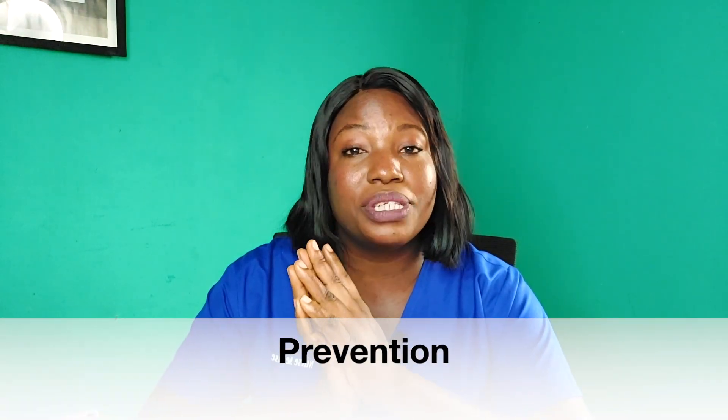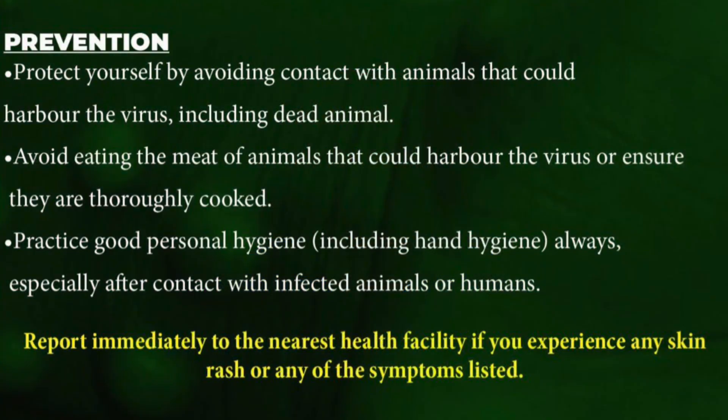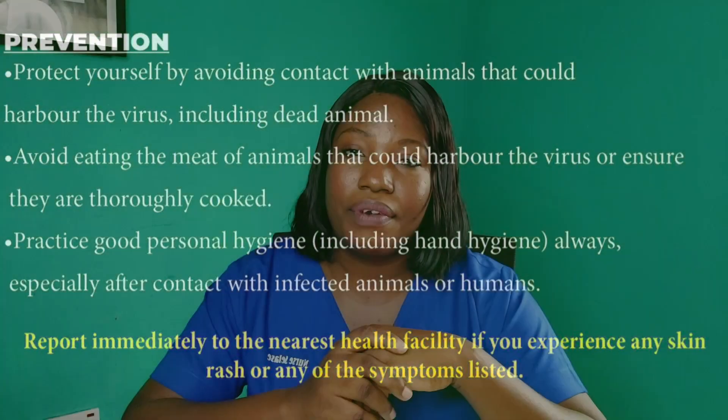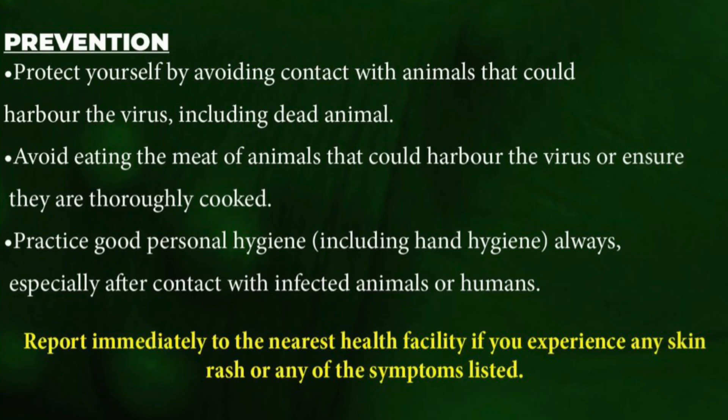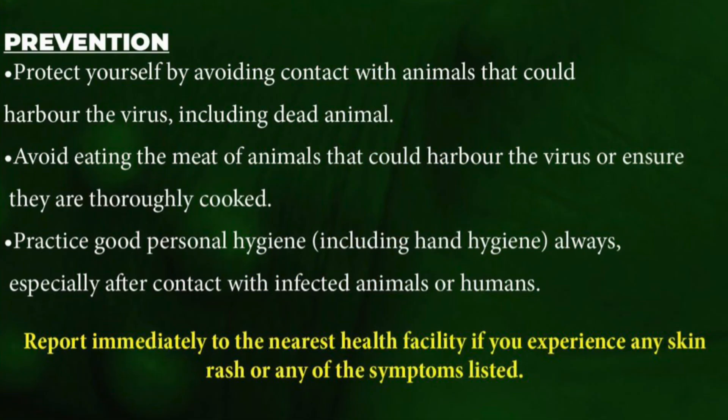That brings us to prevention. The first way is protecting yourself from coming into contact with animals that may harbor the virus — dead or alive: rats, bats. If you are not sure where an animal is coming from, stick to fish. Avoid meat that is not thoroughly cooked — if you bite into meat and some parts are red or pink, avoid it. The third way is to practice good personal hygiene, including good hand hygiene, especially if you come into contact with body fluids of other people or animals. Wash and sanitize your hands, and avoid using the clothing and belongings of someone infected with monkeypox.